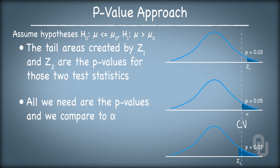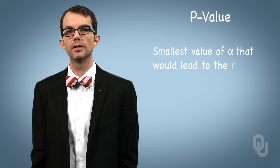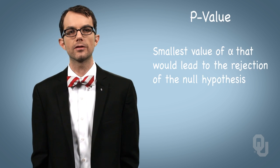The nice thing about the p-value approach is you can have your own alpha with which you'll make a decision, and I can have mine. If you want to be more confident in your answer, you may interpret the result differently than me if my alpha is greater — that is, if I don't need to be convinced as strongly. This is why statistical software generally provides a p-value result: you can interpret the result with an alpha of your choosing. Another way to think about the p-value: it's the smallest value of alpha that would lead to a rejection of the null hypothesis.